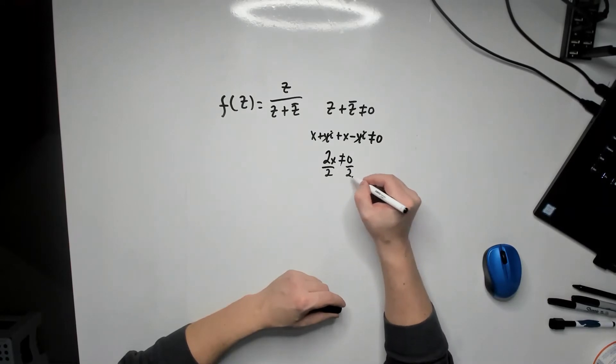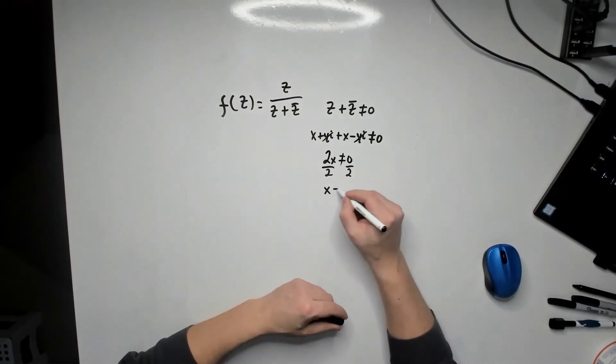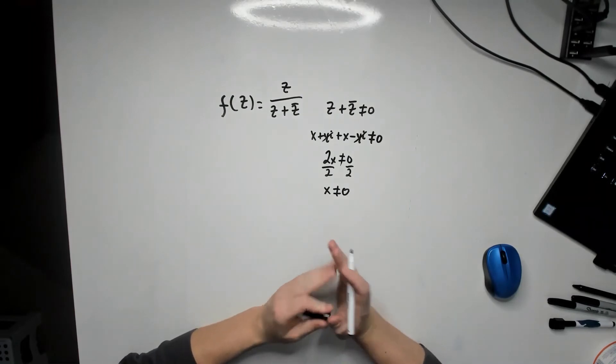Divide by 2. In other words, x cannot be equal to 0.